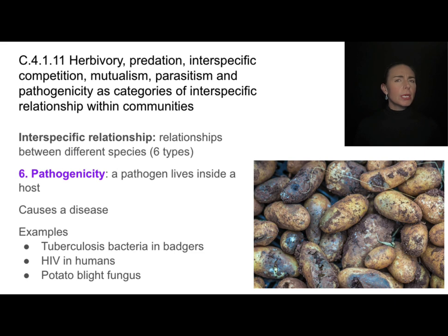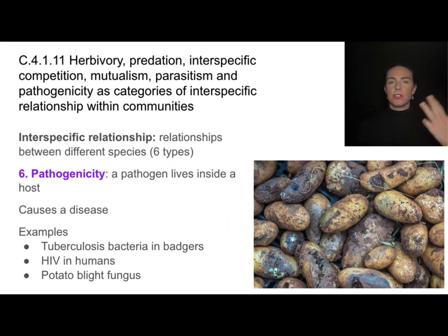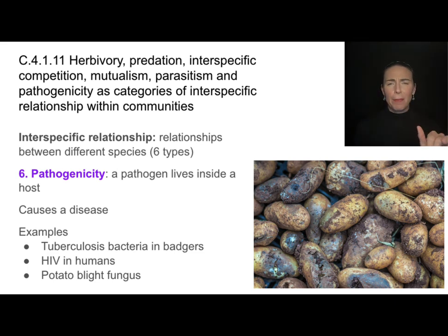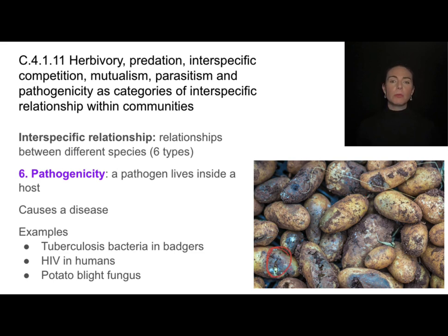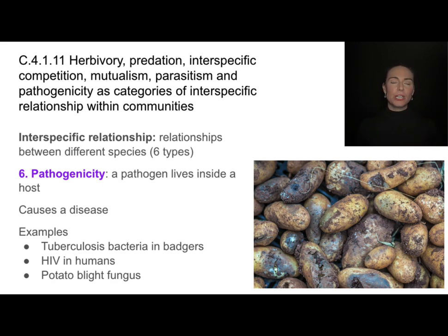The sixth type is pathogenicity, which is exactly what it sounds like — a pathogen such as bacteria, fungi, protist, or virus living inside a host and causing problems. It's unclear what benefit the pathogen gets, but it is still a relationship between two different species — an interspecific relationship. Potato blight is a fungus living on potatoes, acting as a pathogen and causing them to die.